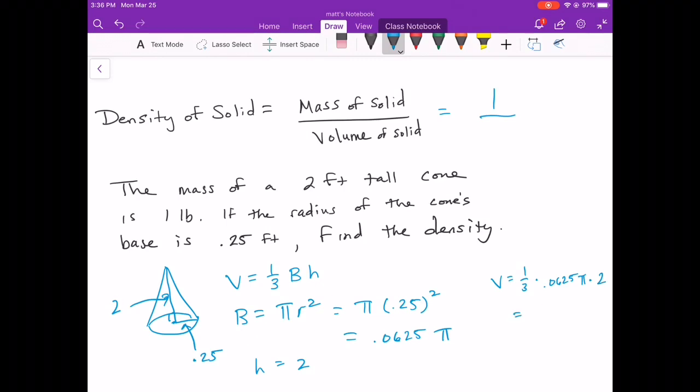And so now our volume formula is going to be one-third times 0.0625 pi times two. Now, because we have fractions and decimals in the same place, I just go ahead and get a number out of my calculator for this in an effort to keep it from being too confusing. So I'm going to go ahead and multiply that out. 0.0625 times pi. Then times one-third and times two. And I get 0.13. And that would be my feet cubed. So I'm going to put that on the bottom, 0.13.